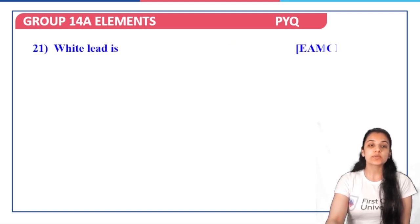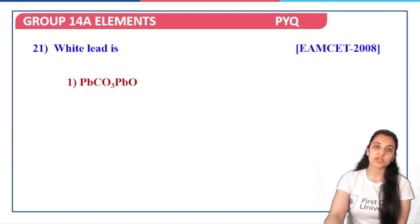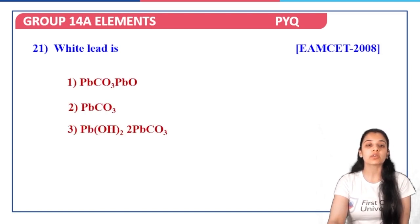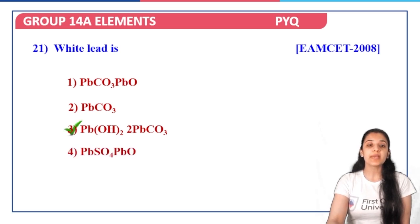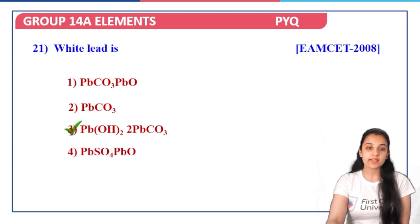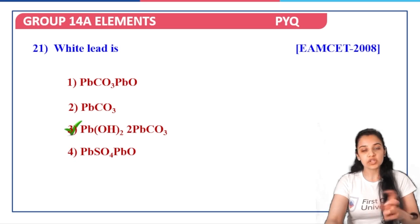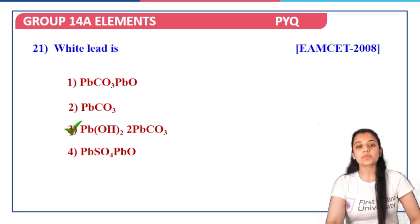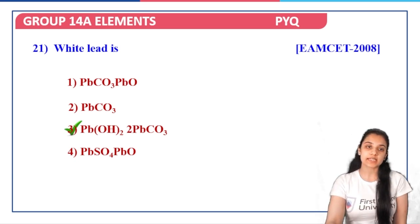Next question: what is white lead? This is an information-based question — jot it down in your notes. White lead is Pb(OH)2 combined with lead carbonate. Option three is the correct answer.